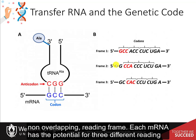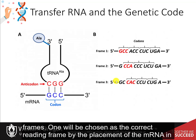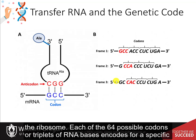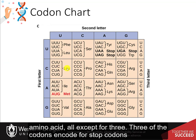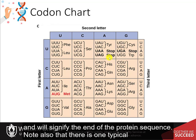Each messenger RNA has the potential for three different reading frames. One will be chosen as the correct reading frame by the placement of the messenger RNA in the ribosome. Each of the 64 possible codons, or triplets of RNA bases, encodes for a specific amino acid — all except for three. Three of the codons encode for stop codons and will signify the end of the protein sequence.